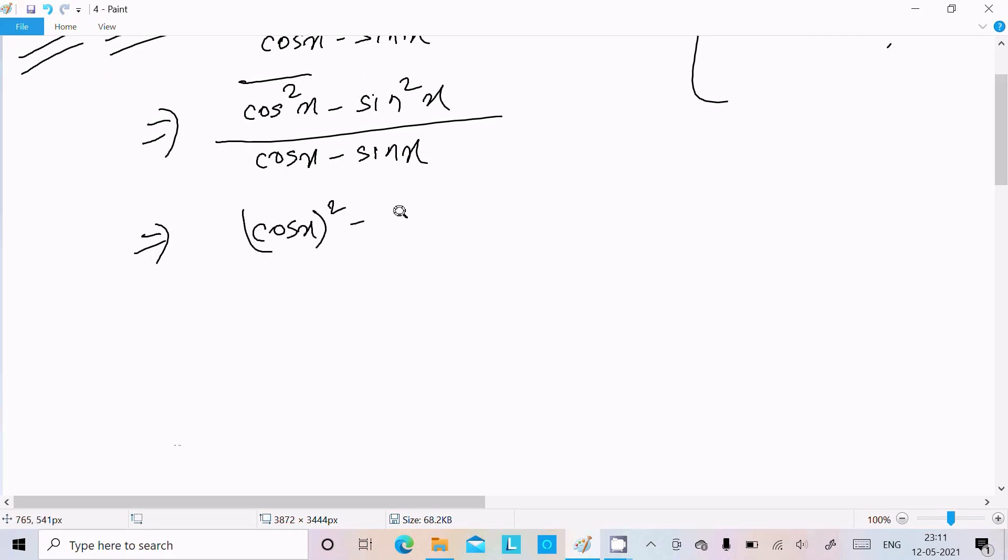In the numerator cosx minus sinx. If you assume cosx is a and this one is b, so a square is there, here a square is there, a square minus in between.